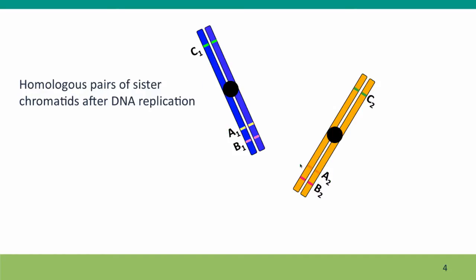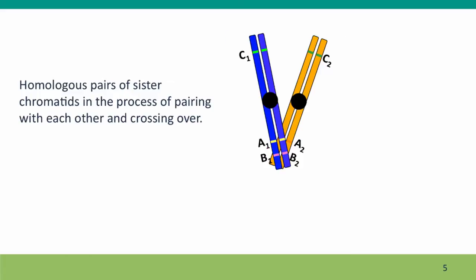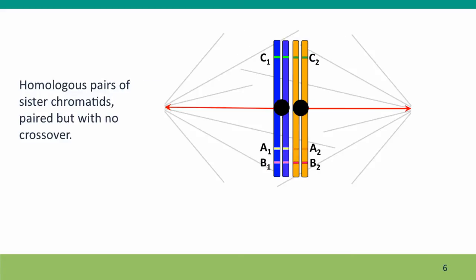Now the chromosomes have replicated, and you'll note that the sister chromatids have exactly the same alleles as they should. And the chromosomes can come together and maybe undergo a crossover. Here's a picture of them paired, the two homologs aligned, ready to separate in meiosis I.